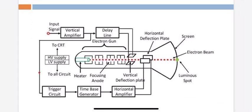The trigger circuit receives its input from the vertical amplifier signal. It then triggers the time-base generator. The purpose of the trigger circuit is to start the time-base generator so that it generates a sawtooth waveform.